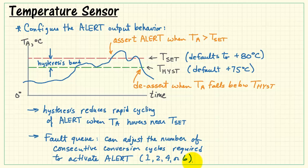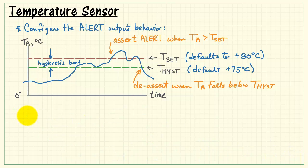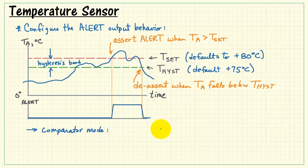You have two bits in the configuration register that are called the fault queue. This adjusts the number of consecutive conversion cycles that are required to activate the alert. You can pick one, two, four, or six. And this reduces sensitivity to perhaps spurious spikes above that threshold. Now the alert output has two possible modes. The first one is the comparator mode. In comparator mode we look for this crossing, and then we look for the crossing right here. When the polarity of the comparator is set high, then the alert output looks like this. It's low, the event happens, it goes high, and then when we fall below the hysteresis line again, it drops low.